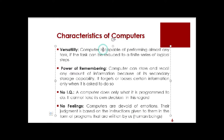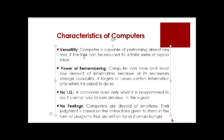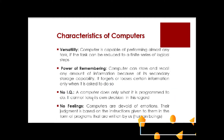Versatility — a computer is capable of performing almost any task, if the task can be reduced to a finite series of logical steps. Power of remembering — a computer can store and recall any amount of information because of its secondary storage capability. It forgets or loses certain information only when it is asked to do so. No IQ — a computer does only what it is programmed to do; it cannot take its own decision. No feelings — computers are devoid of emotions. Their judgment is based on instructions given to them in the form of programs written by human beings.